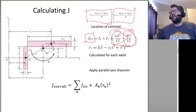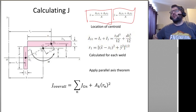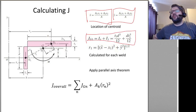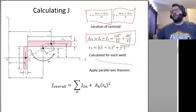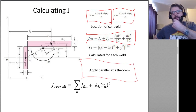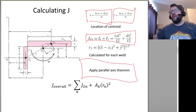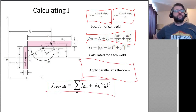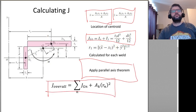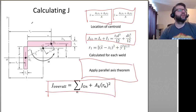Go ahead and calculate your J's for each weld segment, and then of course apply your parallel axis theorem, and then add all those up. You saw that last semester.